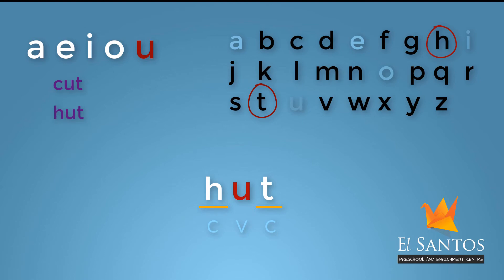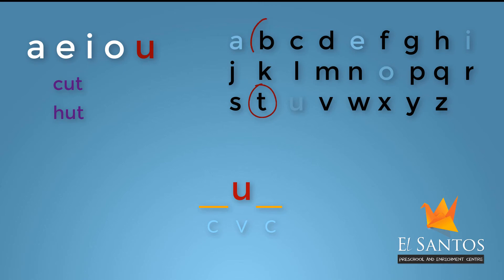For the next word, let's change the consonants to T and B. If I try to blend: T, U, B — Tub.